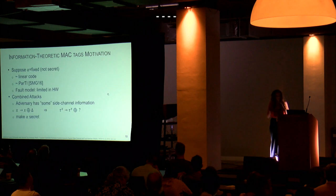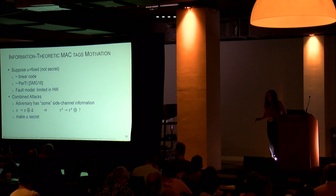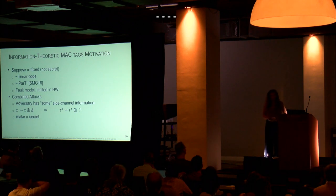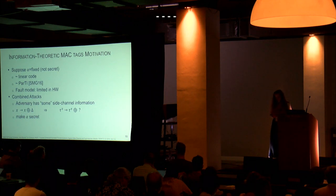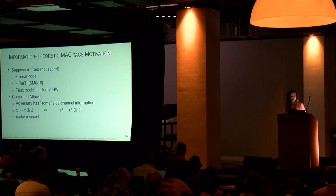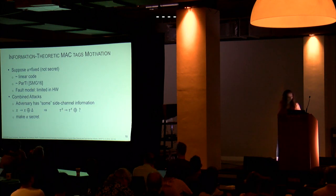What's our motivation behind these tags? Suppose alpha would be fixed — then you can see this as sort of a linear code, which is kind of like the Parti adversary model. But the Parti adversary model limits faults in Hamming weight, and we didn't want to do that. So alpha can be anything. When we look at combined attacks, we assume the adversary can inject faults using some information from side channels. If he injects a fault on X, he has to correct it with some fault on the tag. But if we make sure alpha is secret, then even with this capability, he has no way of finding out what the difference on the tag should be.